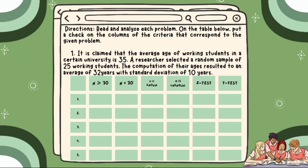Here are the problems that we are going to read and analyze. Number 1: It is claimed that the average age of working students in a certain university is 35. A researcher selected a random sample of 25 working students. The computation of their ages resulted in an average of 32 years with a standard deviation of 10 years.